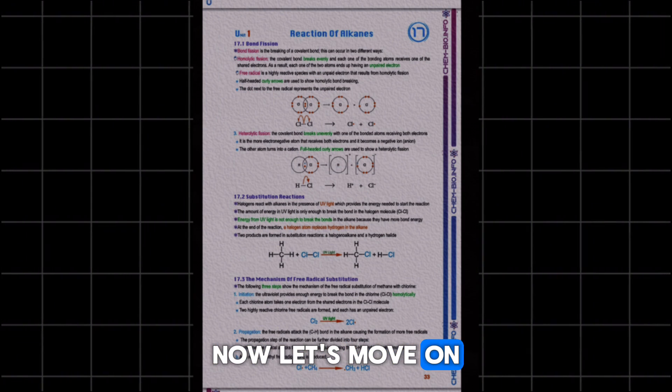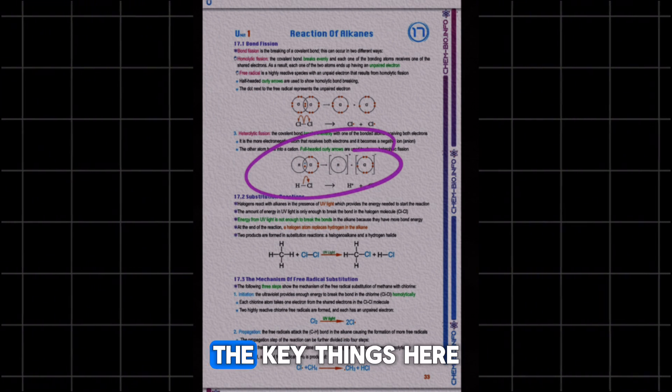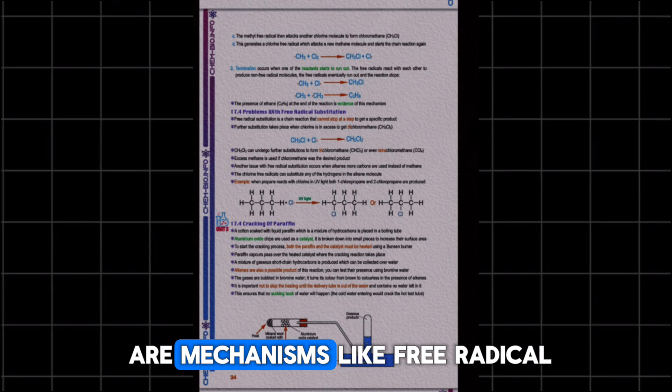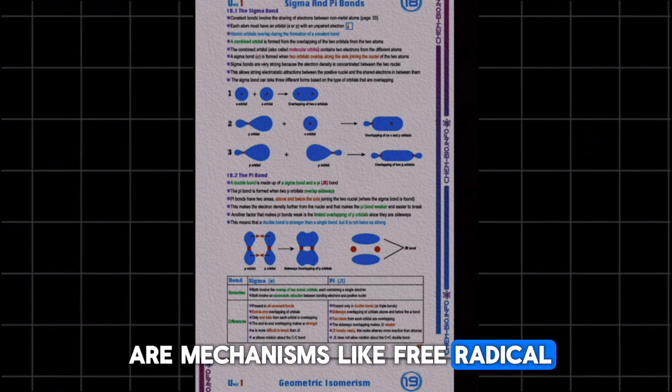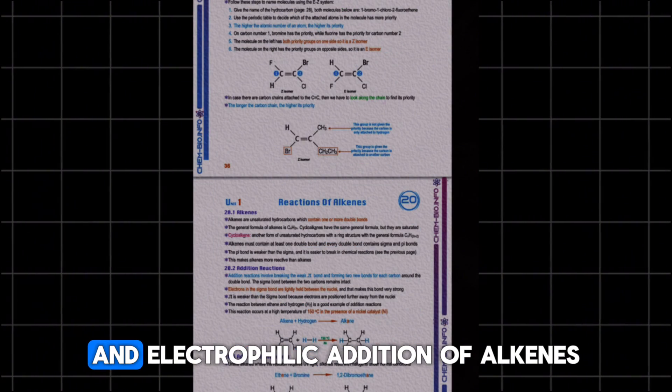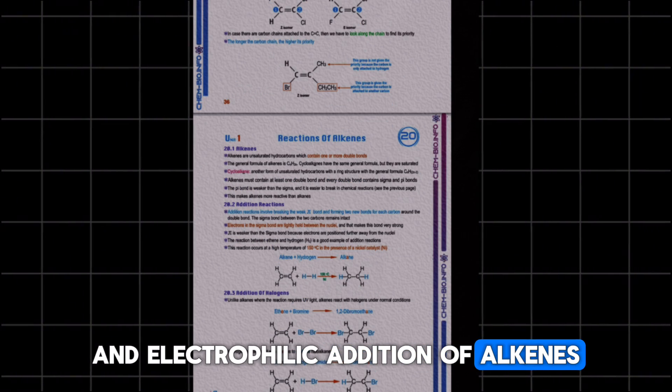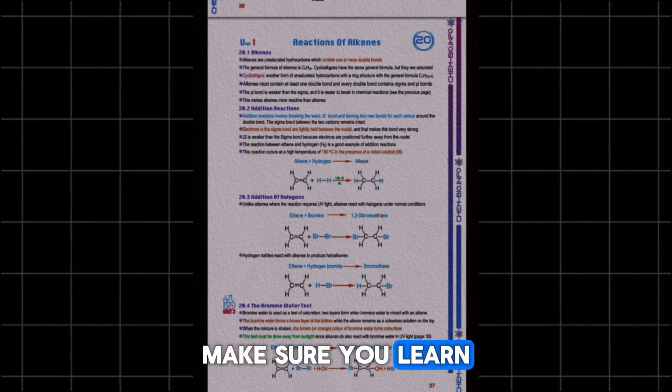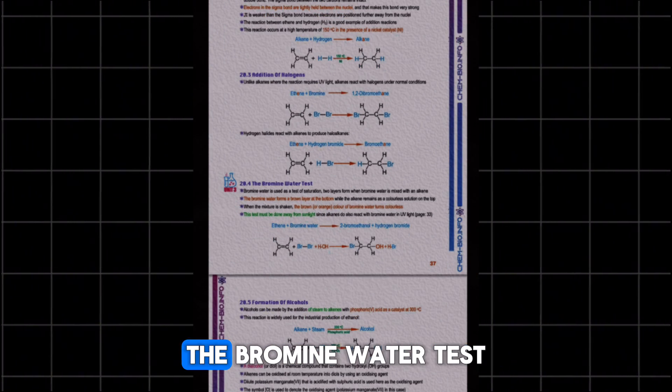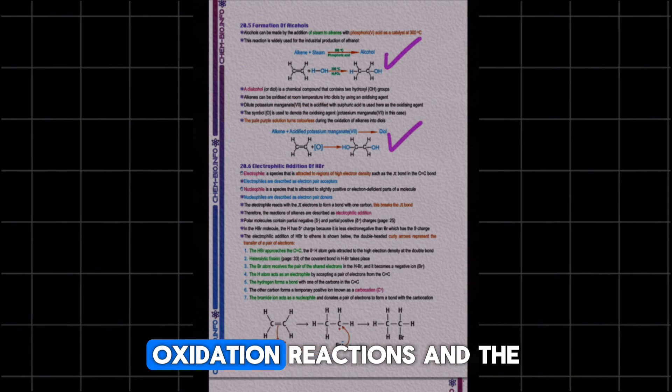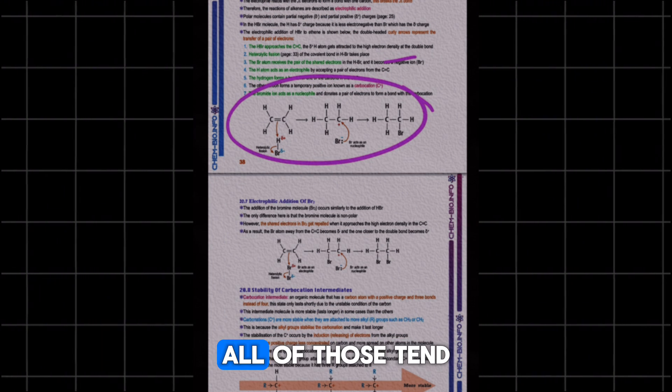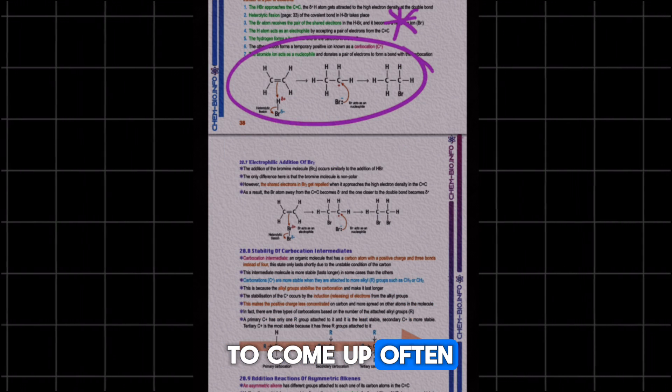Now, let's move on to organic chemistry. The key things here are mechanisms like free radical substitution of alkanes and electrophilic addition of alkenes. And finally, make sure you learn the reactions of alkenes, the bromine water test, oxidation reactions, and the addition of steam. All of those tend to come up often.